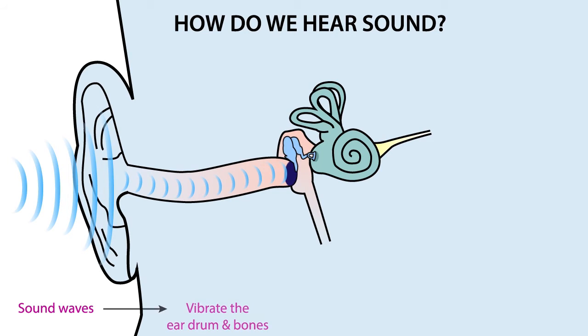These waves cause the eardrum to vibrate, which vibrates the tiny bones in your middle ear. And these bones' vibration pattern activates cells in the cochlea.